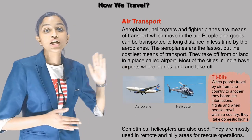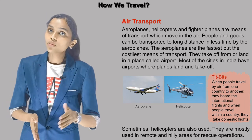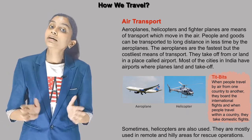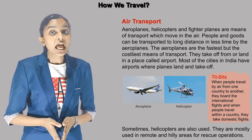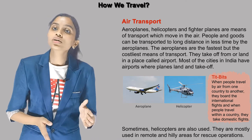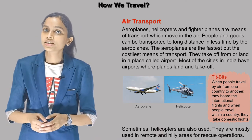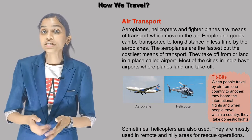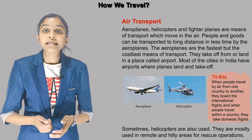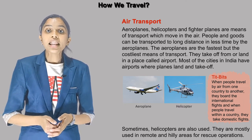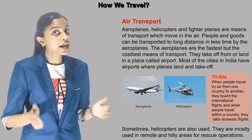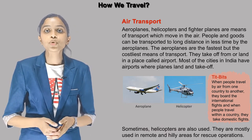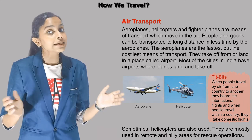Now, air transport. Aeroplanes, helicopters and fighter planes are means of transport which move in the air. People and goods can be transported long distances in less time by aeroplanes. The aeroplanes are the fastest but the costliest means of transport. They take off from or land in a place called an airport. Most of the cities in India have airports where planes land and take off.